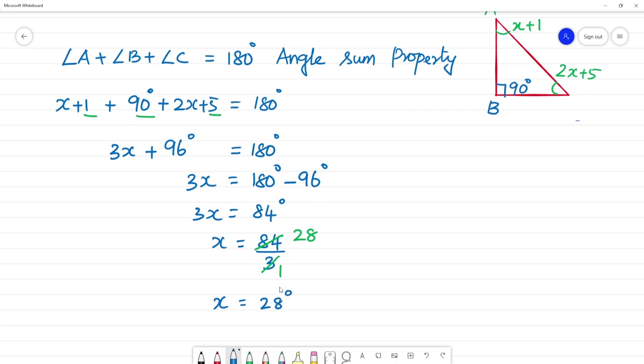So x equal to 28 degree. Right? Now let's find angle A. Angle A is x plus 1. That is 28 plus 1. Angle A is 29 degree.